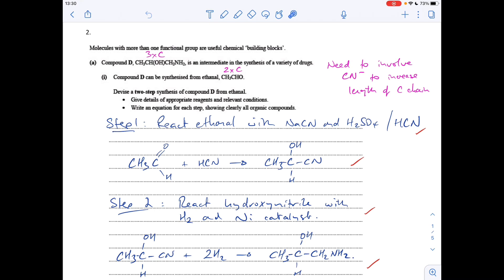We've got to give a two-step synthesis of compound D from ethanol, appropriate reagents and conditions in an equation for each step, showing clearly all the organic compounds. So the way I've done it is step one, I'm getting that carbon chain grown, so I'm reacting ethanol with HCN, or you could actually say the chemicals it's made from. They don't actually use HCN directly, it's too toxic, so they use a mixture of sodium cyanide and sulfuric acid. The mark scheme allowed either those or that, and there's the reaction.